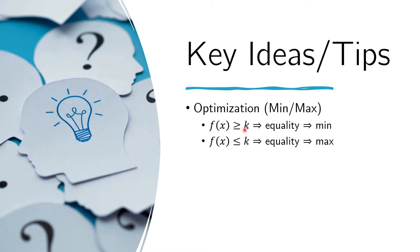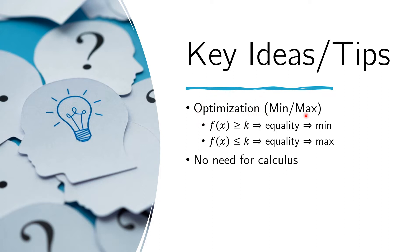That's clear when we realize that k is the minimum if and only if it is less than or equal to any f of x, and k is the maximum if and only if it is greater than or equal to any value of f of x. Now that we're attuned to the idea that we're actually looking for a minimum or maximum, we might be tempted to use calculus. However, we will see that in this problem and many others, we would not need calculus, because the form of the given can actually be reduced to a quadratic function.